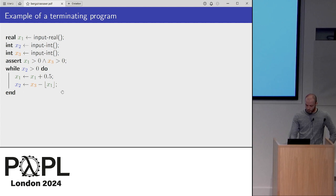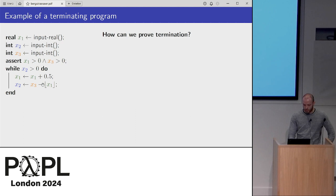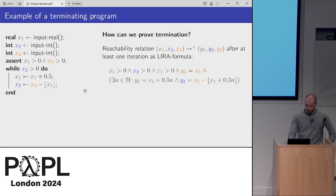Remember that x1 is a real variable. We could ask the question: how can we prove that this program terminates? You immediately see that this should terminate because we just add one half in each step to x1, so x1 is unbounded in some sense. And here x3 minus x1 means that at some point x2 will go below 0.